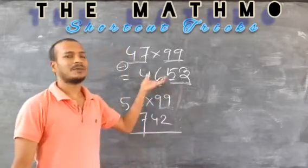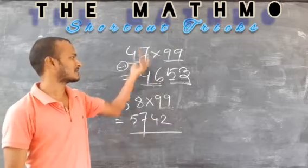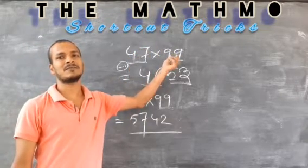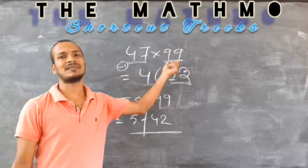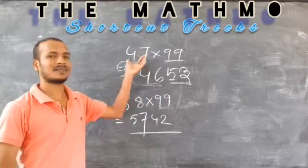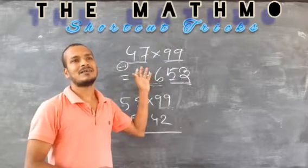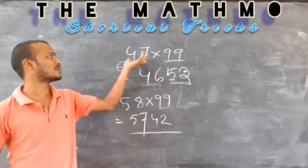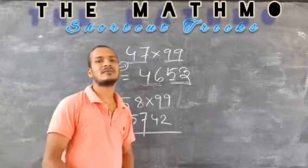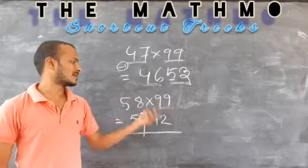So you can apply this process for any two-digit number which you need to multiply with 99. If one number is 99, the other number can be anything — from 1 to 99, any one-digit or two-digit number. You can apply this process.